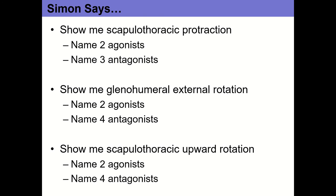Four antagonists for scapular upward rotation — the downward rotators: pec minor, rhomboid major, rhomboid minor, and levator scapulae.